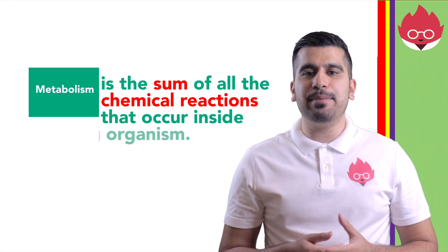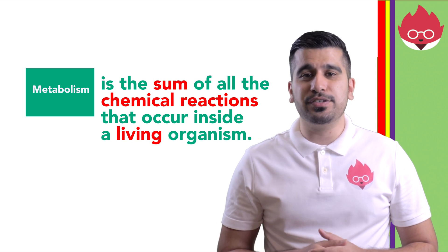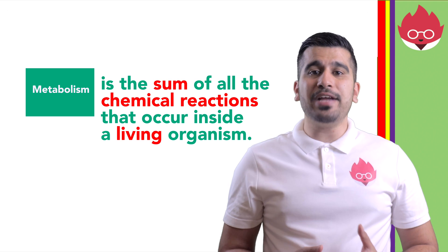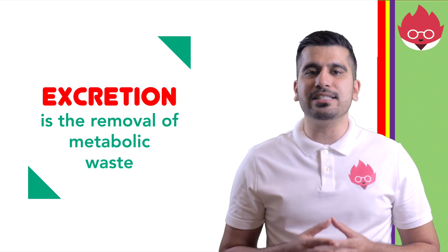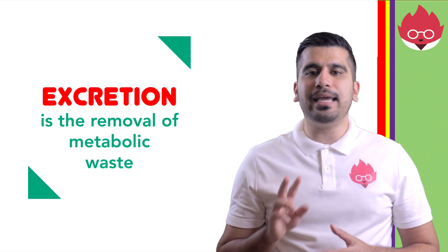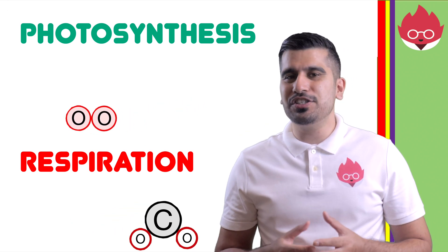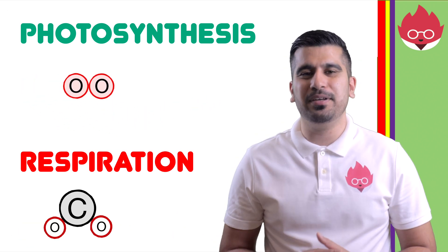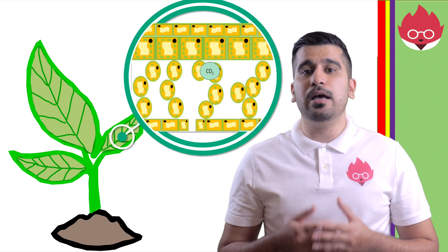Metabolism is all the chemical reactions that occur inside a living organism. Two important metabolic reactions include photosynthesis and respiration. These reactions produce waste products that need to be removed from an organism. Excretion is the removal of metabolic waste. In plants, there are two main excretory products: oxygen from photosynthesis and carbon dioxide from respiration. Both gases are lost from the plant by diffusion out of the leaf via the stomata.